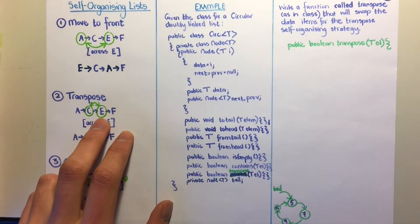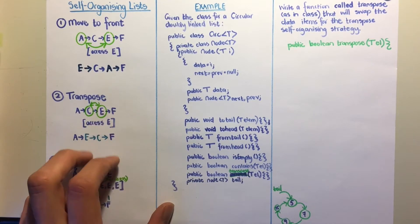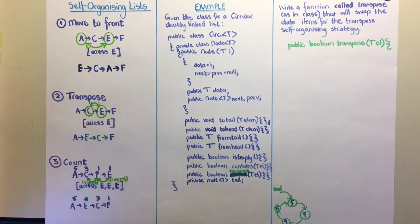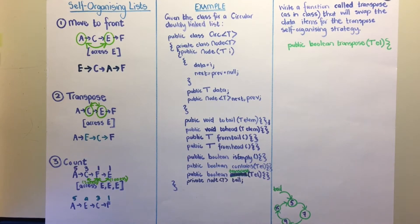For the transpose method, if you access E in the same list, it will be swapped with its direct predecessor — the element that comes directly before it. So if E is accessed, it will be swapped with C.